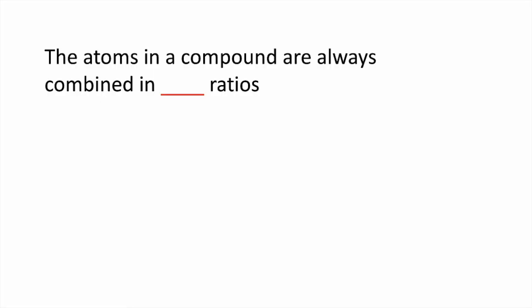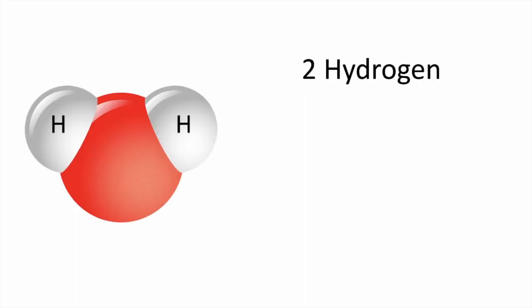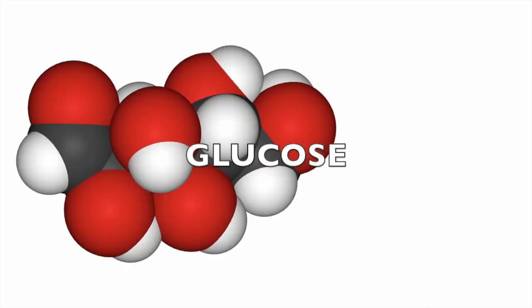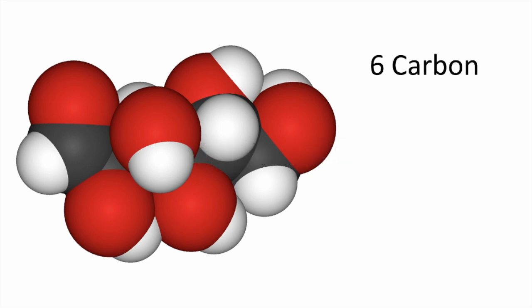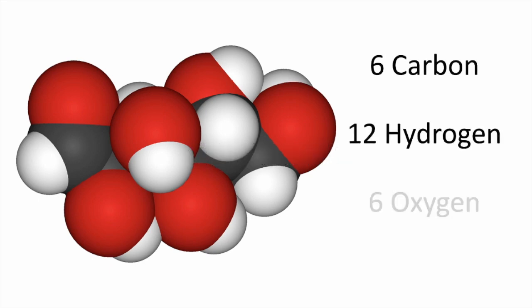The atoms in a compound are always combined in fixed ratios. For example, water always has two hydrogen atoms and one oxygen atom. Glucose, which is a type of sugar, always has six carbons, 12 hydrogens, and six oxygens.